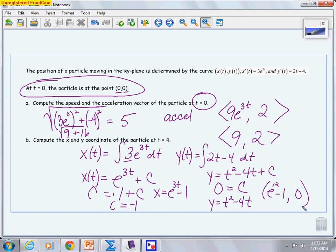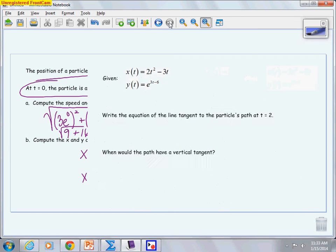The last problem that I want to walk you through is a little bit of a review of what we did with parametrics and talking about slope and tangent lines with parametrics. So we're given two parametric equations, or if you want to think of it as vector or position vectors for a particular particle. And we want to write an equation of a line tangent to the particle's path at t = 2, and then we want to determine when the path would have a vertical tangent.